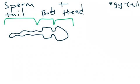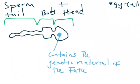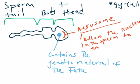Inside the head are two important things. Number one, we have the nucleus, and the nucleus contains the genetic material of the father. We also have a structure at the front of the head called the acrosome. The function of the acrosome is that it allows the nucleus in the sperm to enter the egg cell by dissolving the layer surrounding the egg cell.